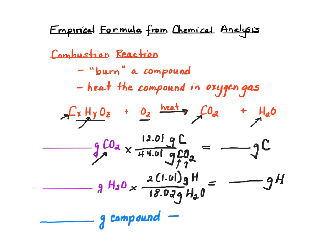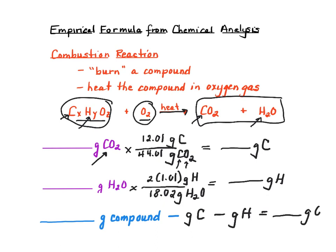Now, how do we find the mass of oxygen? This appears to be pretty complicated because there's oxygen in the original compound, there's oxygen being added, and then all this oxygen ends up in two different places. Thankfully, there's an easy solution. We will know the total mass of compound that we burned. All we need to do is subtract the mass of carbon and the mass of hydrogen. So we'll take the grams of compound minus the grams of carbon minus the grams of hydrogen, and we'll be left with however many grams of oxygen there were.